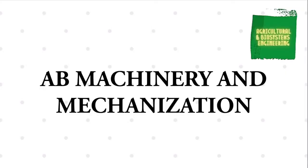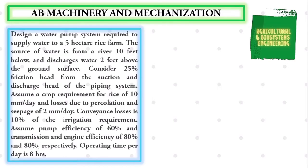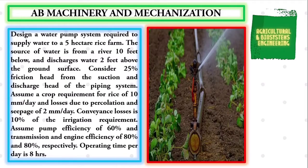Welcome to another tutorial video regarding A-B Machinery and Mechanization. This time, we will be solving the problem: design a water pump system required to supply water to a 5-hectare rice farm. The source of water is from a river 10 feet below, and discharges water 2 feet above the ground surface.